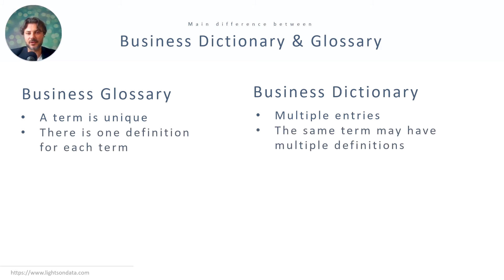A business glossary has only one definition for each term — a one-to-one relationship. A business dictionary could have the same term point to multiple definitions — a one-to-many relationship. If we're looking for the term 'report' and its definition as an end user, you always need to figure out the context and understand which definition you should refer to.